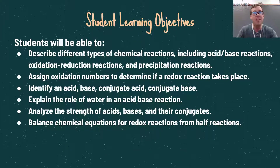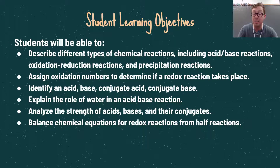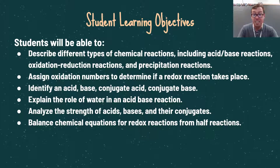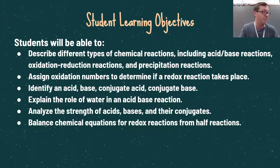By the end of this video you will be able to describe different types of chemical reactions including acid-base reactions, oxidation-reduction reactions, and precipitation reactions. You should also be able to assign oxidation numbers to determine if a redox reaction takes place, identify an acid, base, conjugate acid, or conjugate base, explain the role of water in an acid-base reaction, analyze the strengths of acids and bases, and balance chemical equations for redox reactions from half reactions.